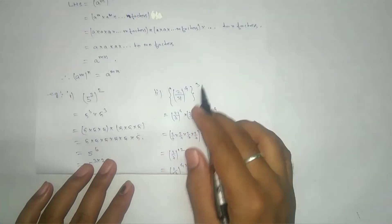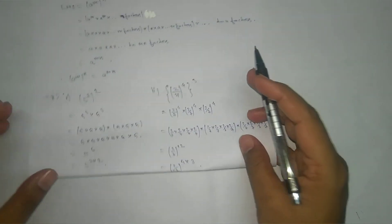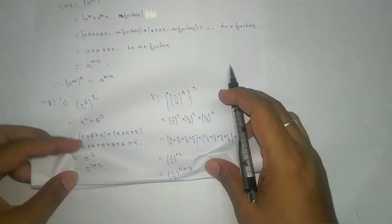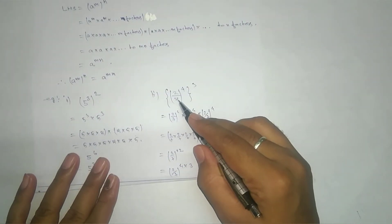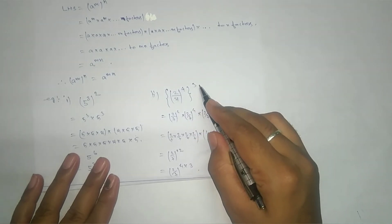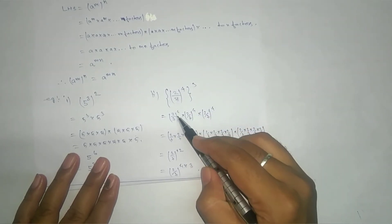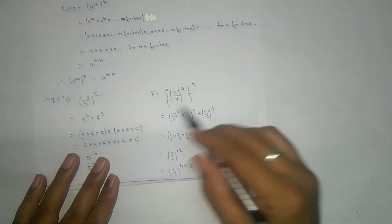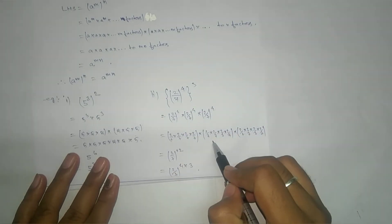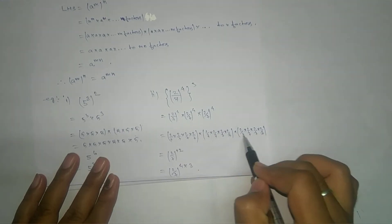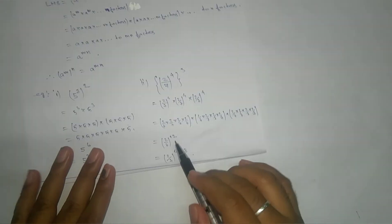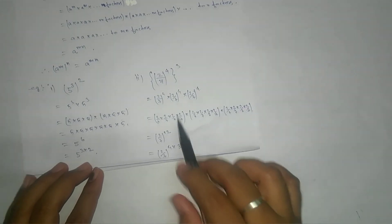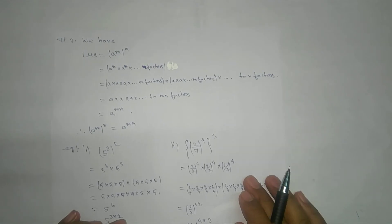Taking out the bracket you can count: 1, 2, 3, 4, 5, 6 — that means 5 to the power 6, and 6 can be represented as 3 times 2. For another example, 2 by 7 to the power 4 to the power 3: we expand and count 1 through 12 factors, giving 4 times 3 equals 12, so the result is 2 by 7 to the power 12.